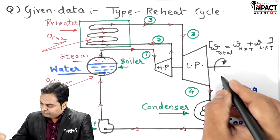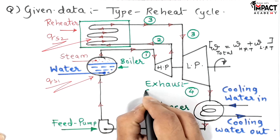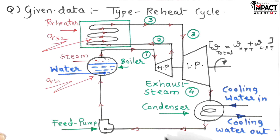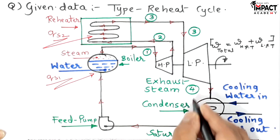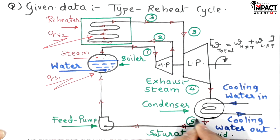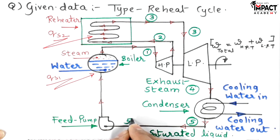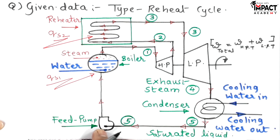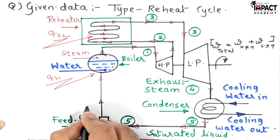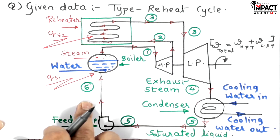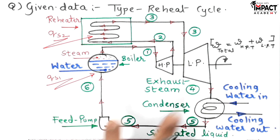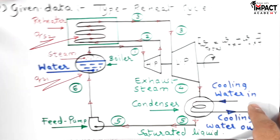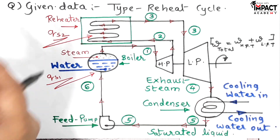At point four the exhaust steam enters the condenser where cooling water is circulated, and the steam gets converted into saturated liquid. After point four we have point five, and at point five it is fed to the feed pump, which pumps it from point five to point six. At point six it enters the boiler. This is the complete reheat cycle, which is used to increase the net work output of the steam power plant.